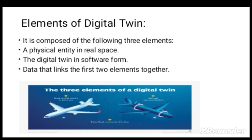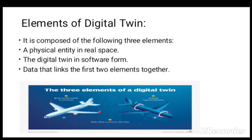What are the main elements of digital twin technology? A physical identity exists in real space, the digital twin exists in soft form as data, and the data links the first two elements together. For example, on the left side there is an airplane displaying the physical identity in real space, and on the right side there is a plane displaying the digital twin in soft form. The thing that links both of them is the data gathered.